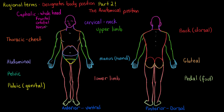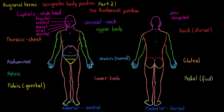The cephalic region is subdivided into frontal, orbital, nasal, oral, and mental. The frontal region is just the portion of your head above your eyes. Orbital is where your eyes are. Nasal is your nose. Oral describes where the mouth is, and mental is just your chin. We've also got the otic and occipital regions, still considered part of the cephalic region — otic is the ear and occipital is the back of the head.